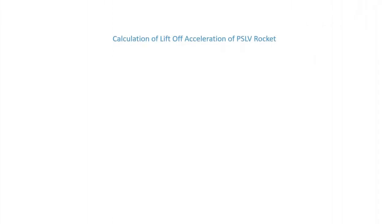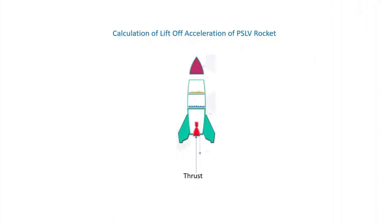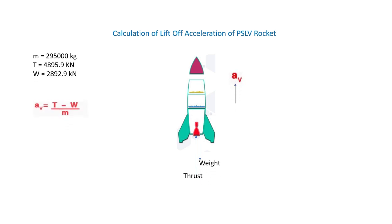Now let us calculate the liftoff acceleration of the PSLV rocket. The rocket has upward thrust T, downward weight W, and upward acceleration Av. By applying the formula Av = (T − W) / M, we get the acceleration to be 6.78 meters per second squared.